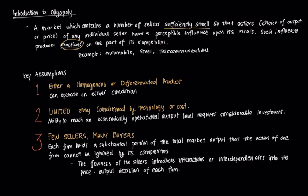Examples of oligopolies commonly include the automobile market, where there are few sellers — a considerable number, definitely not a monopoly — but the decisions of one firm will definitely affect the decisions of other firms. The same goes for the steel industry. And perhaps most popularly in the context of developing nations, the telecommunications sector — a lot of those companies generally operate in an oligopoly.